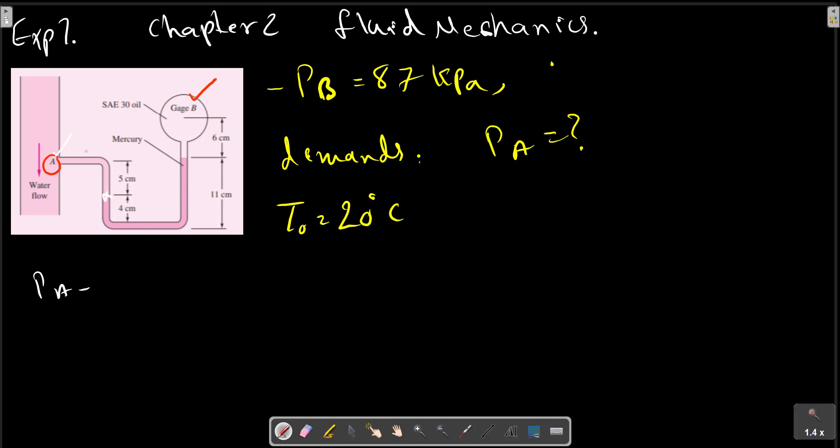We can read it. It is water and it is mercury, okay. We can name here as point 1 and this point as 2 and B. PA minus P1 plus P1 minus P2 plus P2 minus PB, which is equal to PA minus PB.